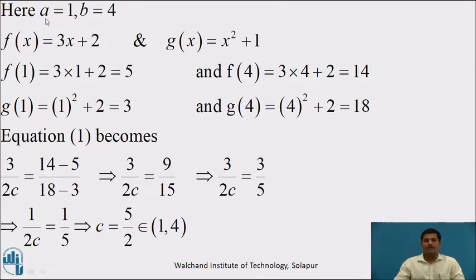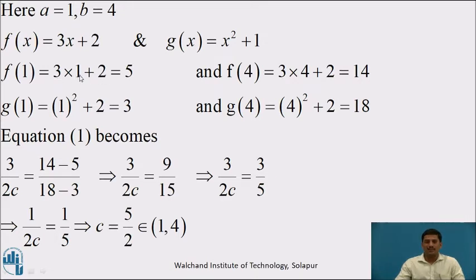In this example, the initial point a is 1 and the endpoint b is 4. The functions are f(x) = 3x + 2 and g(x) = x² + 1. Let us calculate the values of these two functions at the endpoints. Putting x = 1 in f(x): f(1) = 3(1) + 2 = 5. Putting x = 4: f(4) = 3(4) + 2 = 14. Similarly, calculate g(x) at the endpoints.